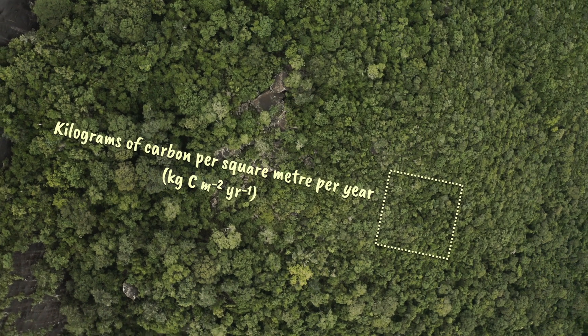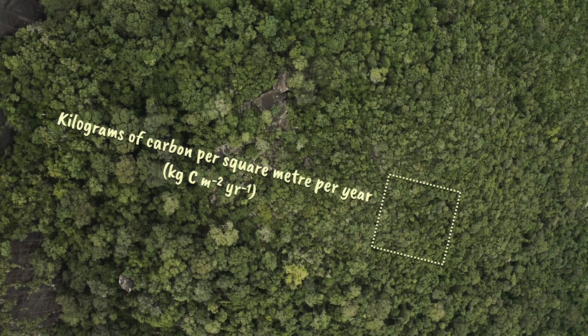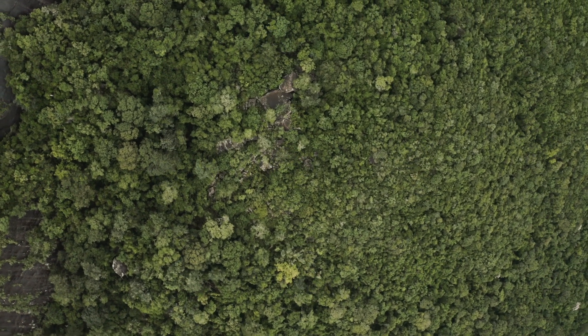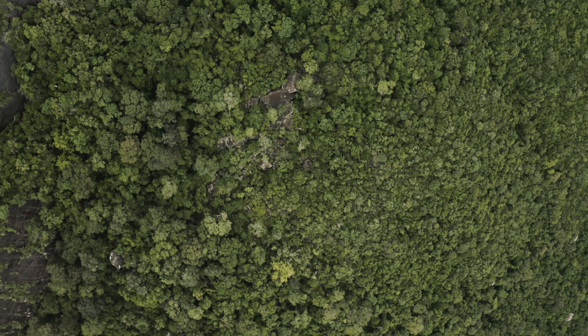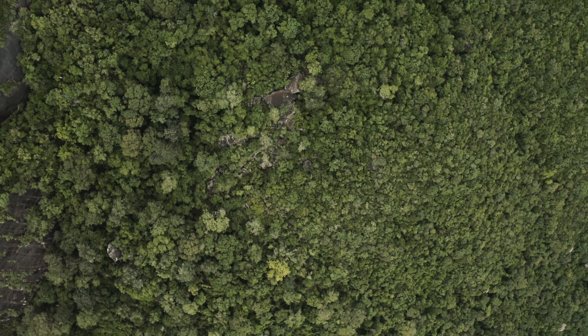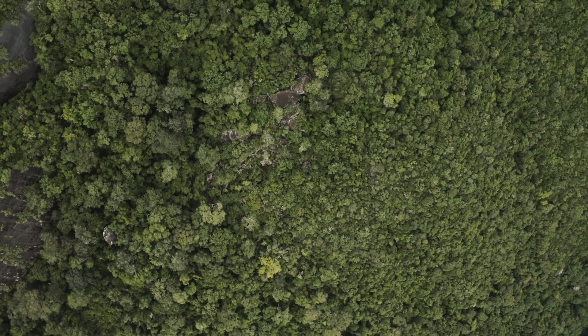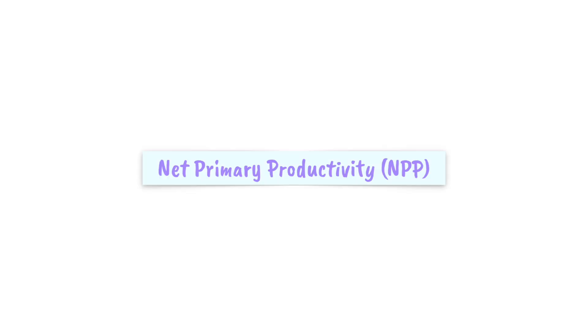Using a given area is really useful when comparing different ecosystems, and I'll give you some examples in a moment. But before that, let's think about what the 'net' in net primary productivity means.